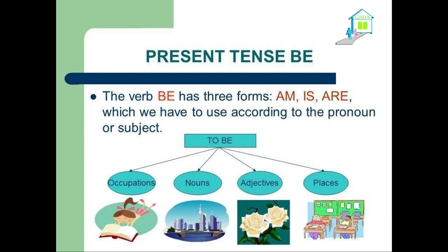To start with, we have the present tense of the verb to be. The verb to be has three forms: am, is, and are, which we have to use according to the pronoun or subject.